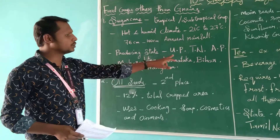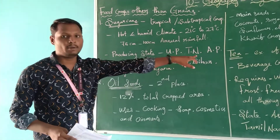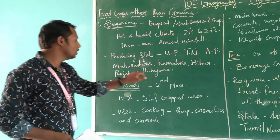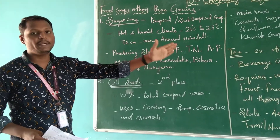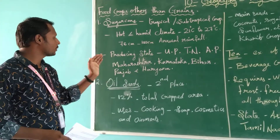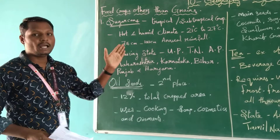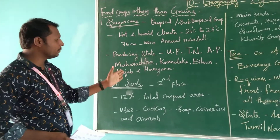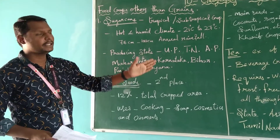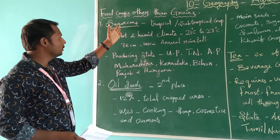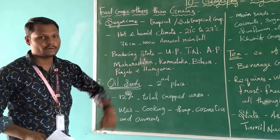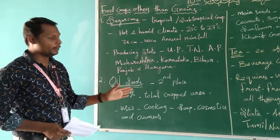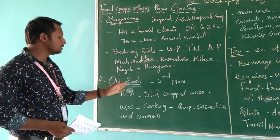The producing states of sugarcane are Uttar Pradesh, Tamil Nadu, Andhra Pradesh, Maharashtra, Karnataka, Bihar, Punjab, and Haryana. The second crop is oilseed. India is the second largest producer of oilseeds after China.